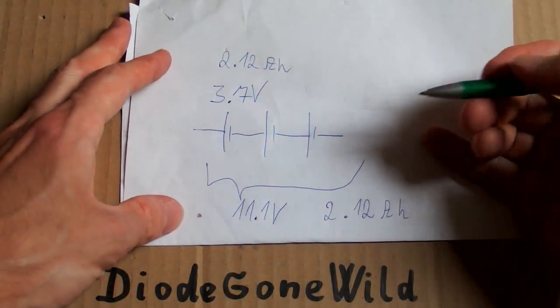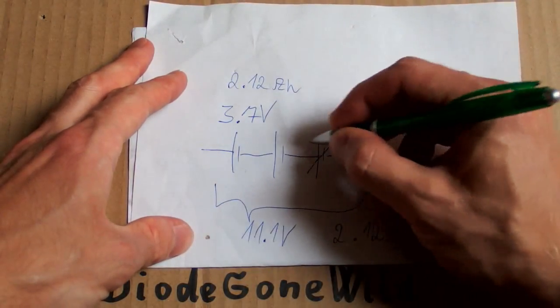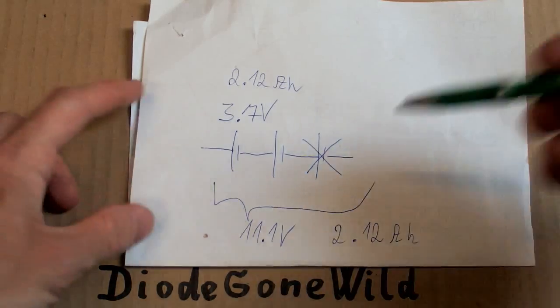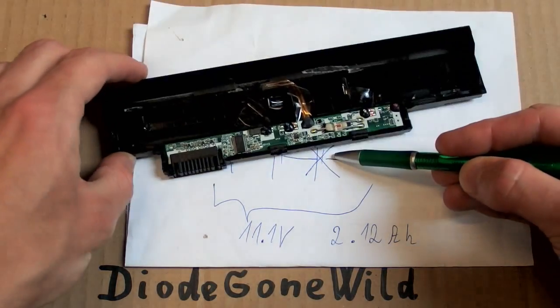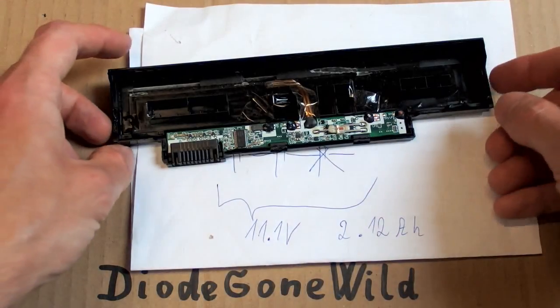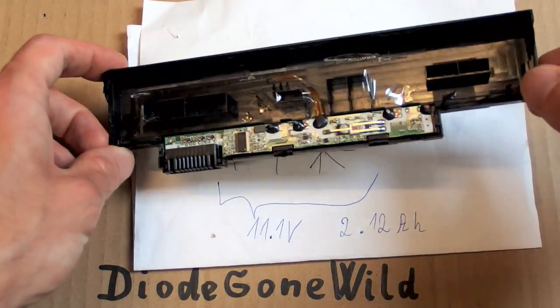And because they are in series, if one of them goes out, the entire battery pack fails. And this is what happened in this one. And this is also why you can find a lot of good cells in a dead battery pack.